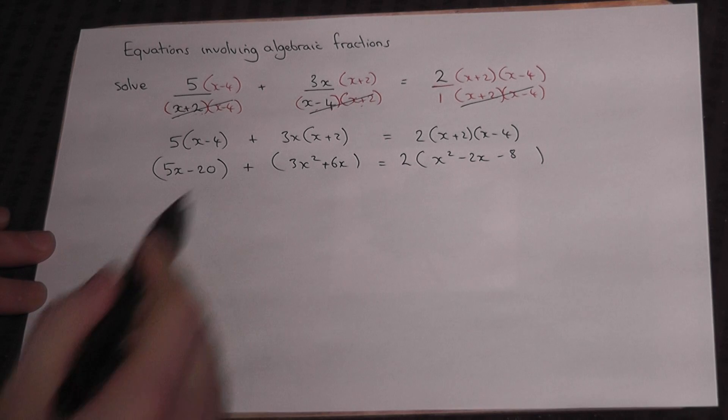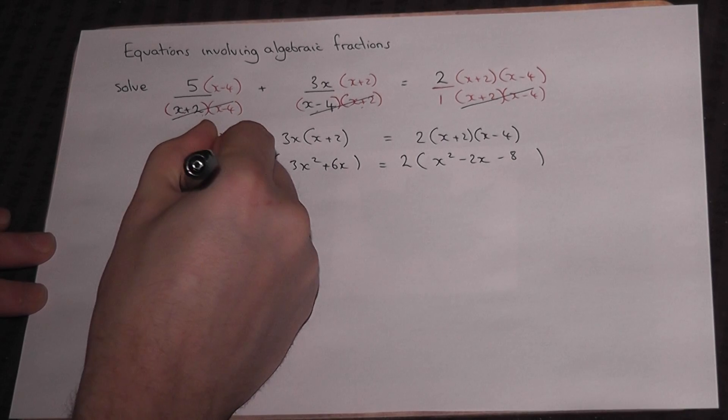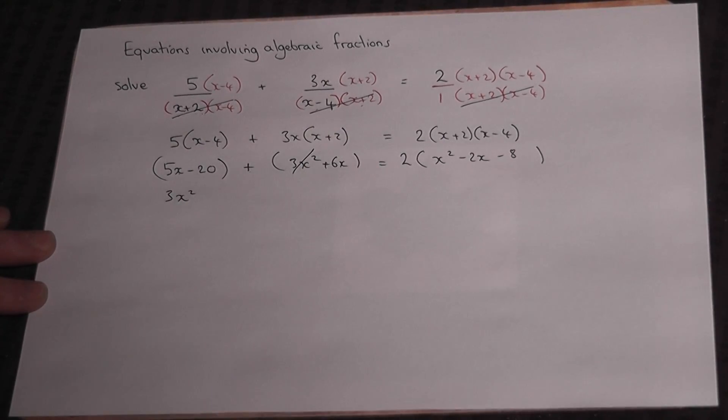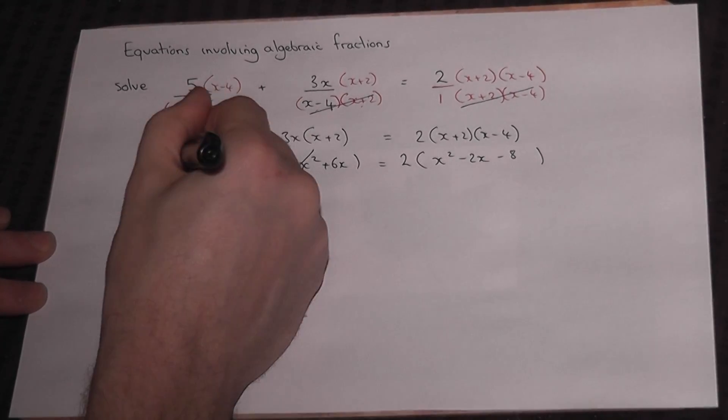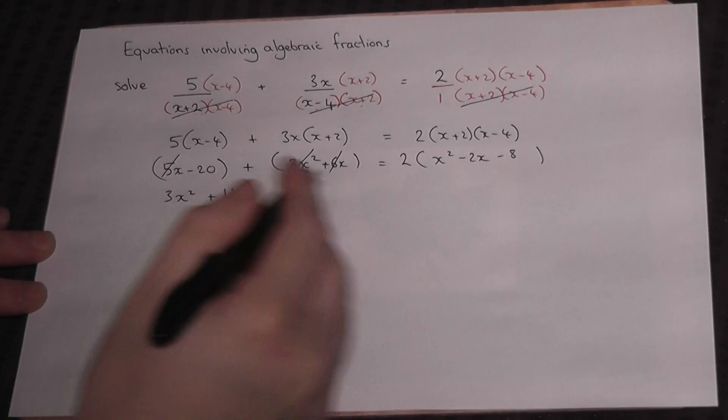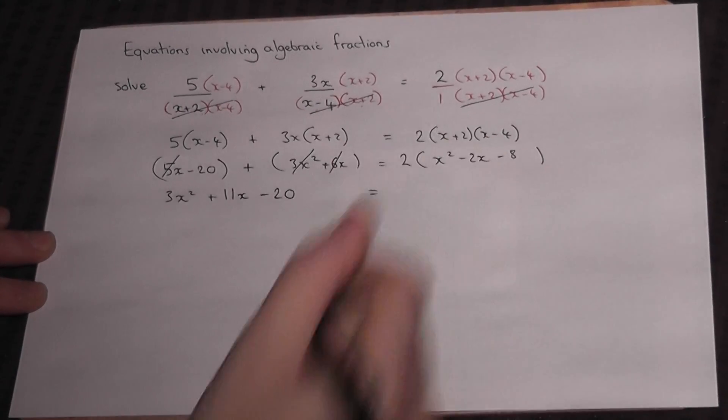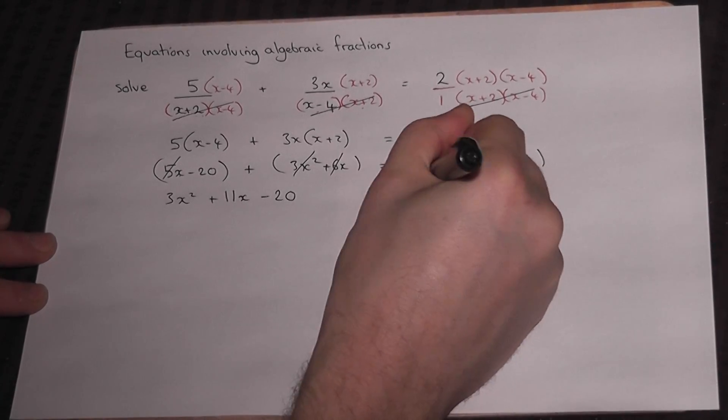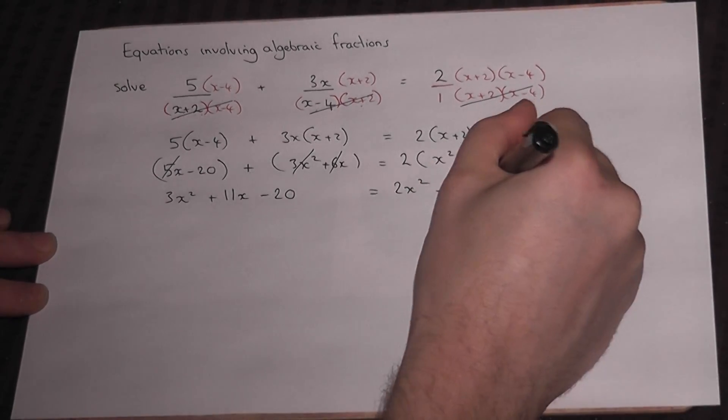We've expanded the brackets and begin to make it simpler. On the left hand side there's 3x squared, 5x plus 6x which is 11x, and minus 20. This equals the right side doubled, so 2x squared minus 4x minus 16.